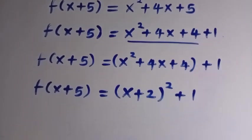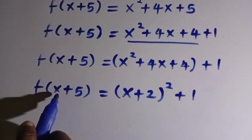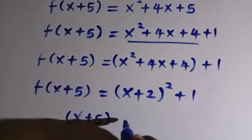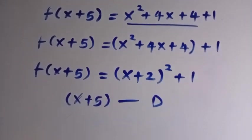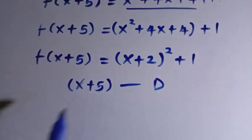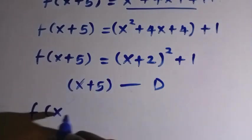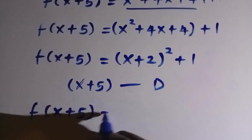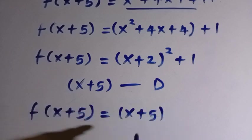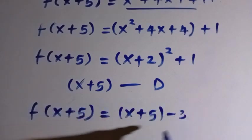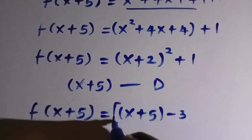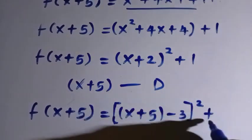After having this, we need x plus 5 here. We know that x plus 5, which is inside this function, is our domain. So let's call it d. I want to manipulate this thing so that f of x plus 5 equals, and if I change x plus 2 to x plus 5, I need to subtract 3. So we have x plus 5 minus 3, all squared, plus 1.